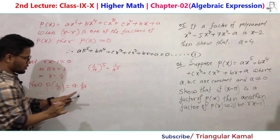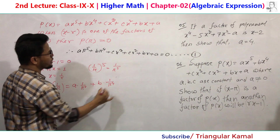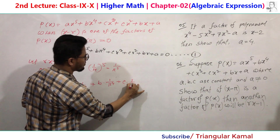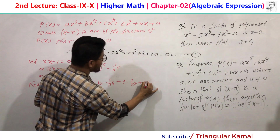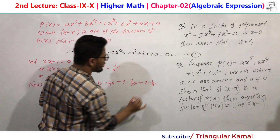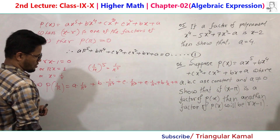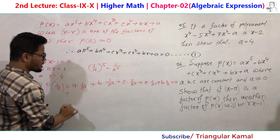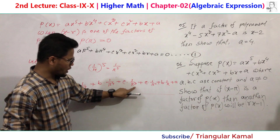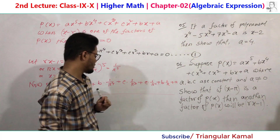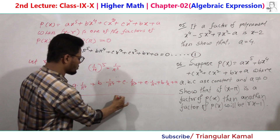Continuing p(1/r): we get a/r^5 plus b/r^4 plus c/r^3 plus c/r^2 plus b/r plus a. Now take the LCM. The denominators are r^5, r^4, r^3, r^2, r, and 1, so the LCM is r to the power 5.